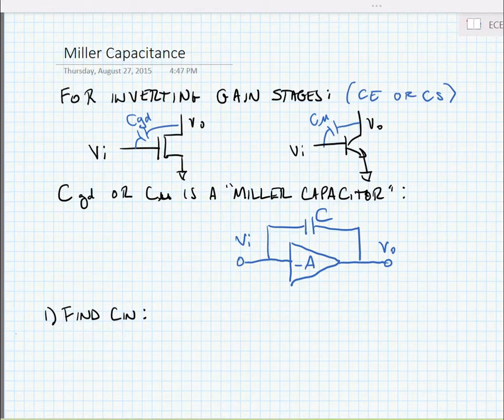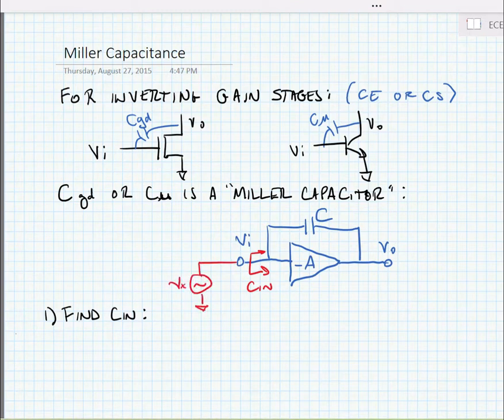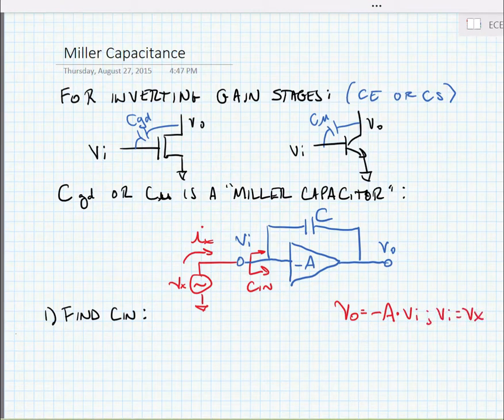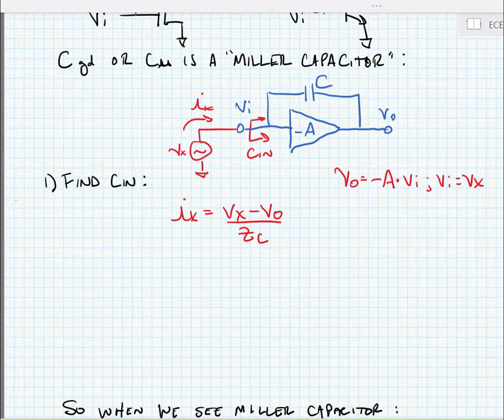Now let's find the input capacitance looking into this. In order to do so, we're going to put a test voltage source Vx, measure the test current Ix flowing into the circuit. We can find Cin. Now we know that Vout is equal to minus A times Vin. We also know that Vin is equal to Vx, our test voltage source. So we can write an expression Ix is equal to Vx minus Vout over Zc.